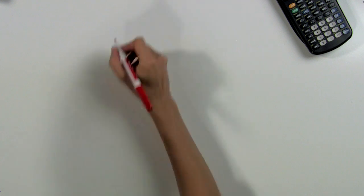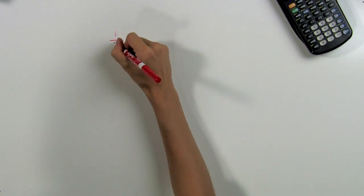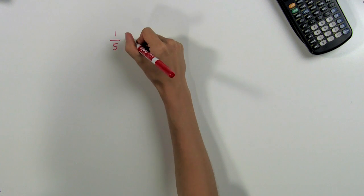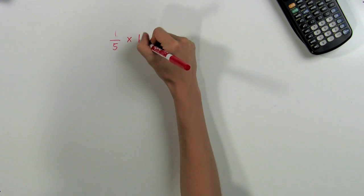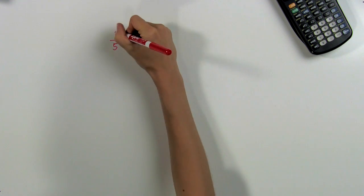Let's look at an example. Suppose we want to multiply 1/5 by 14. To find the exact answer, we would actually need to multiply it out, but to get an estimate, we can just look for some compatible numbers.